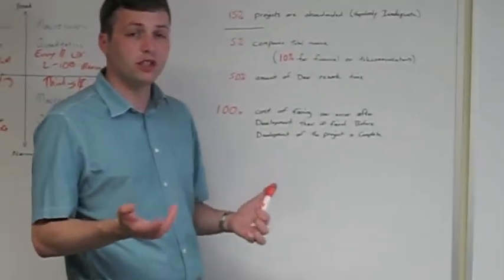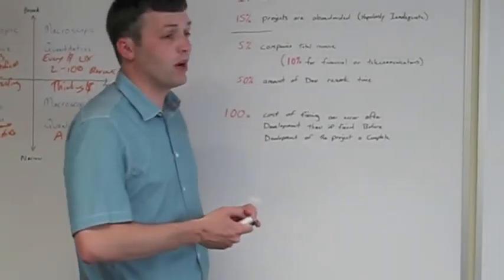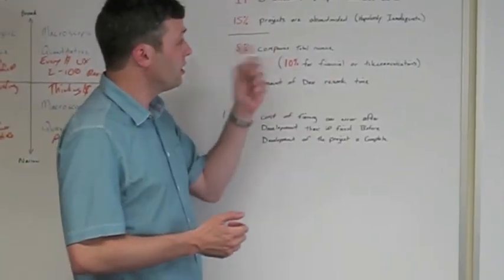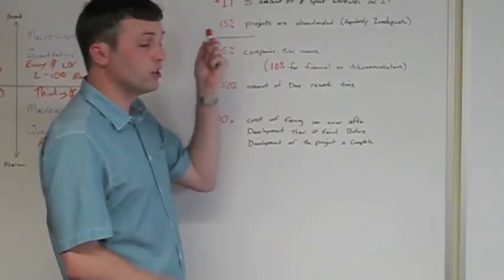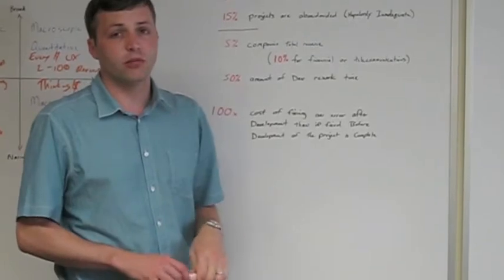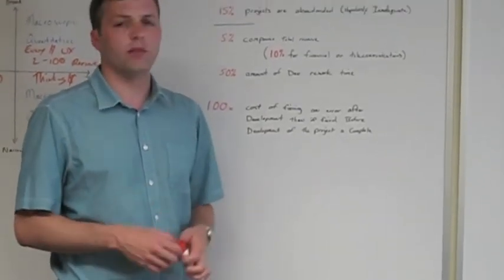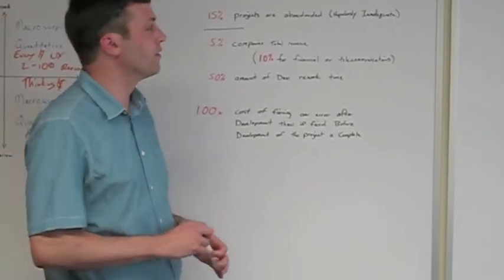But why does this make such a huge difference? If you think about the market, IEEE did a big thing on why software fails. And worldwide, yearly, about $1 trillion is spent in IT. And 15% of those projects are abandoned, and usually because they're hopelessly inadequate. There's some sort of element that's just never going to happen. The project's never going to make it out.